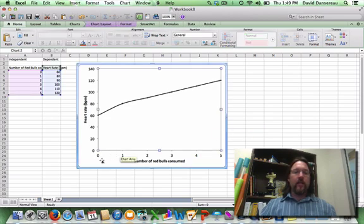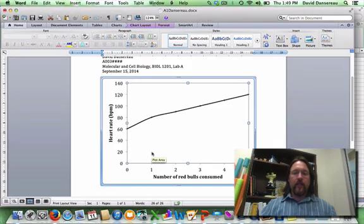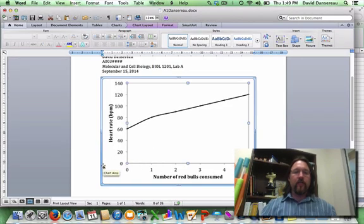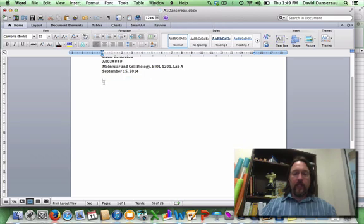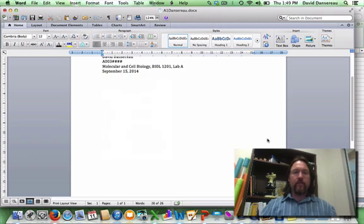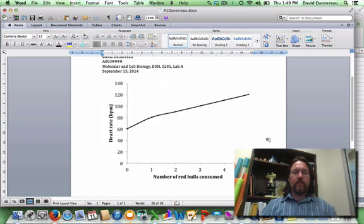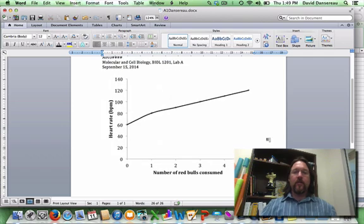Now I'm going to select the whole graph again, copy it, go back to Word. I can delete this one by pressing Delete after it's selected. And I'll paste my new graph in. There. That looks pretty good.